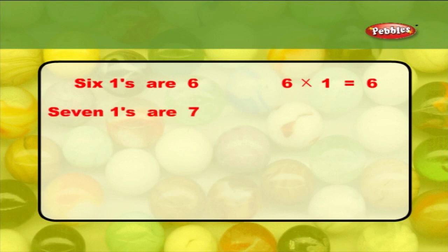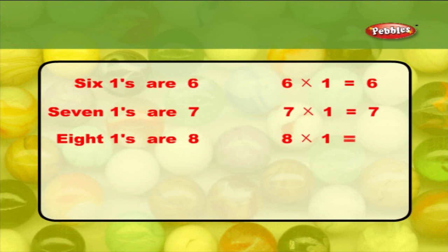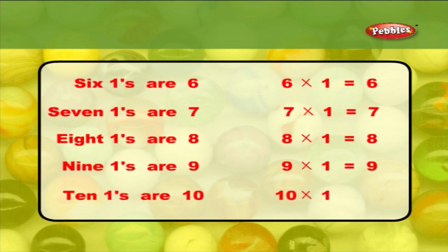Seven ones are seven. Seven into one is equal to seven. Eight ones are eight. Eight into one is equal to eight. Nine ones are nine. Nine into one is equal to nine. Ten ones are ten. Ten into one is equal to ten.